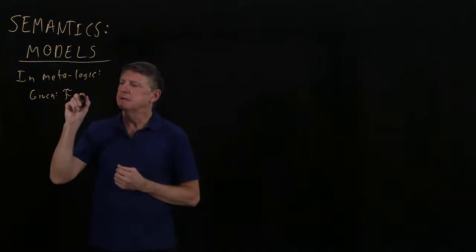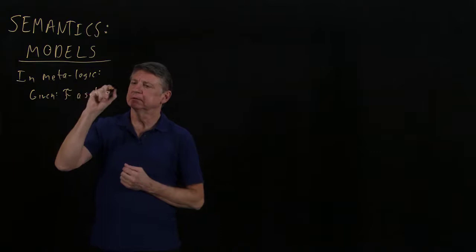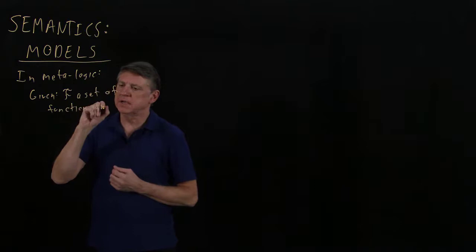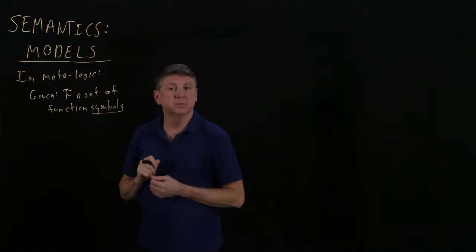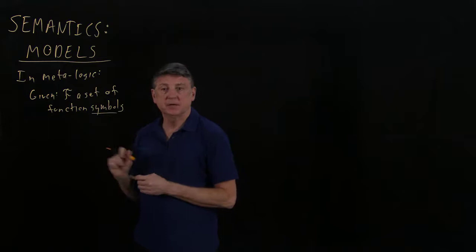F is a set of function symbols, and let's be clear that we're in a metalogic, and so the notion of a set of symbols makes sense. It doesn't make sense within the deduction system. It makes sense in the metalogic.